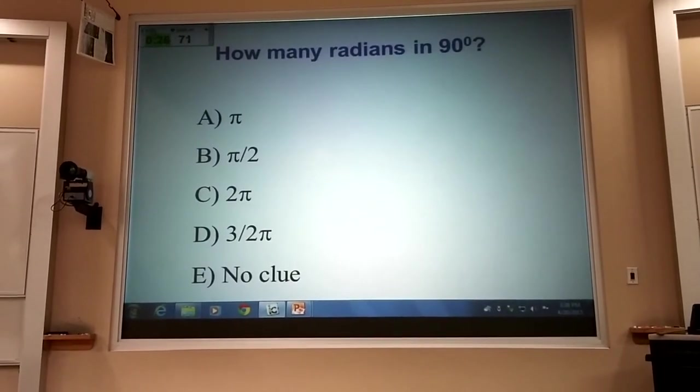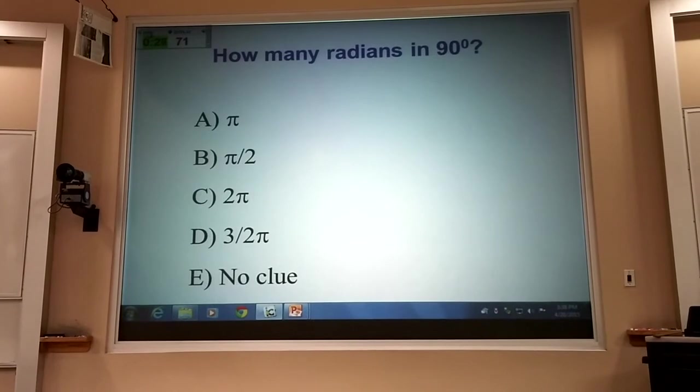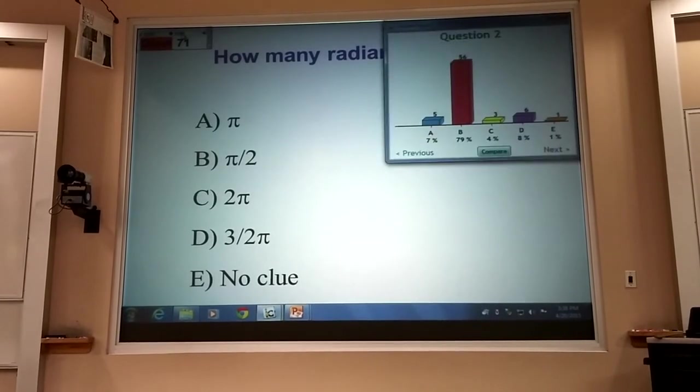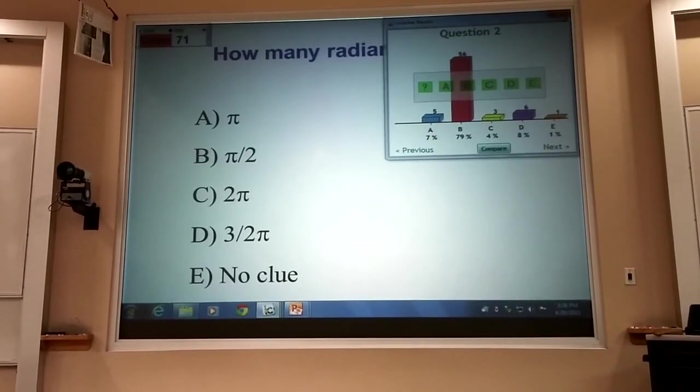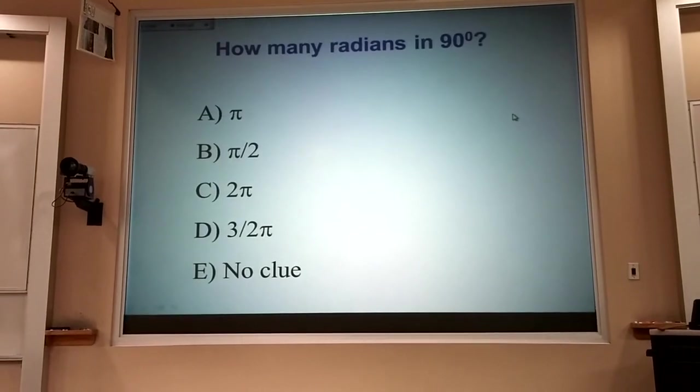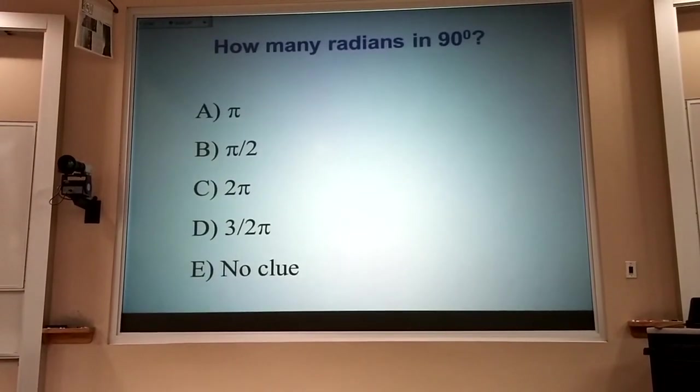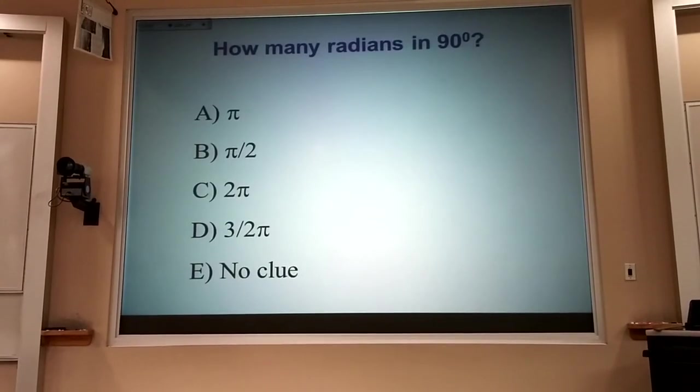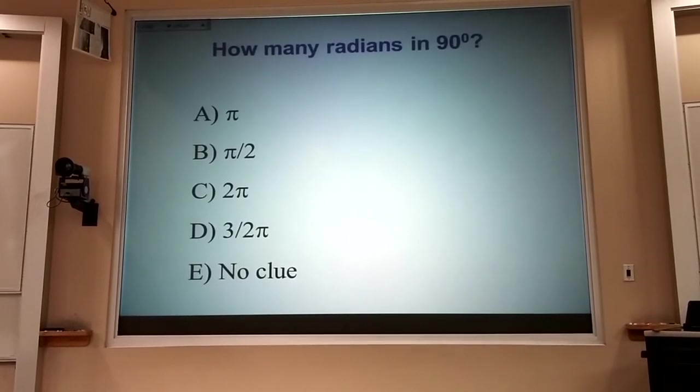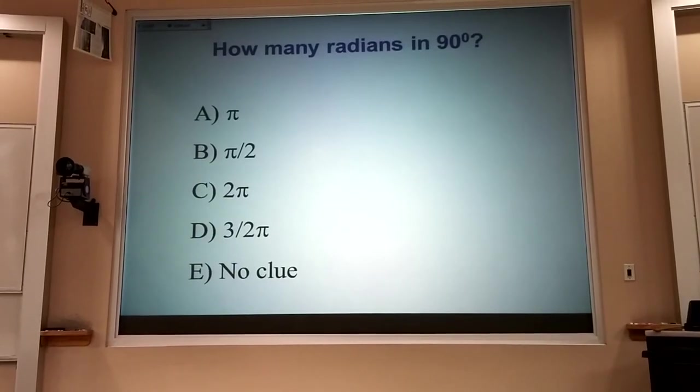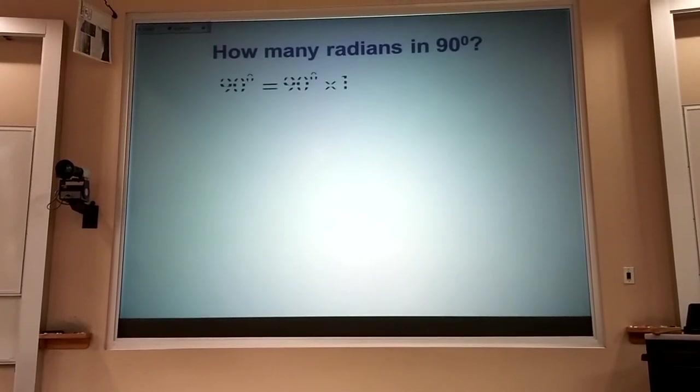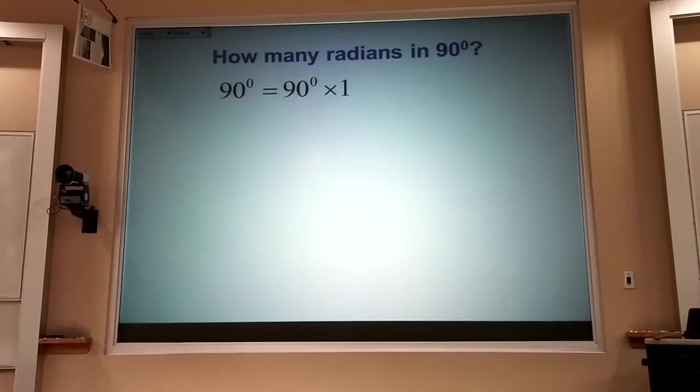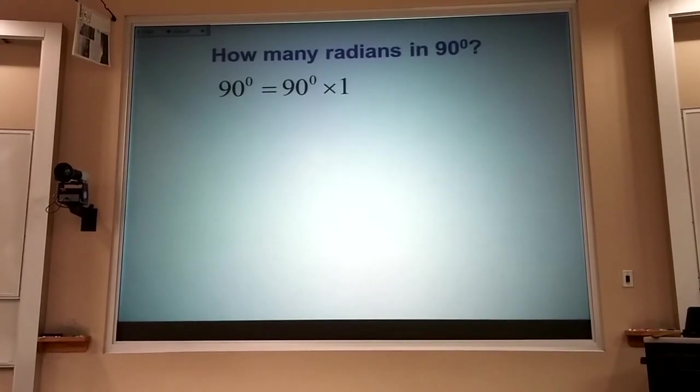Is that all of us? Good. The answer is B, π/2. Now, some of you may have a button on your calculator that converts degrees to radians. That's handy. If you don't, it's always easy to convert. If I start with 90 degrees, well, that's going to be equal to 90 degrees. That's obvious.